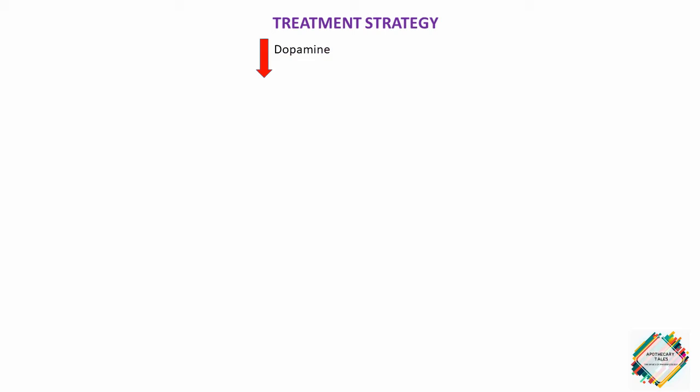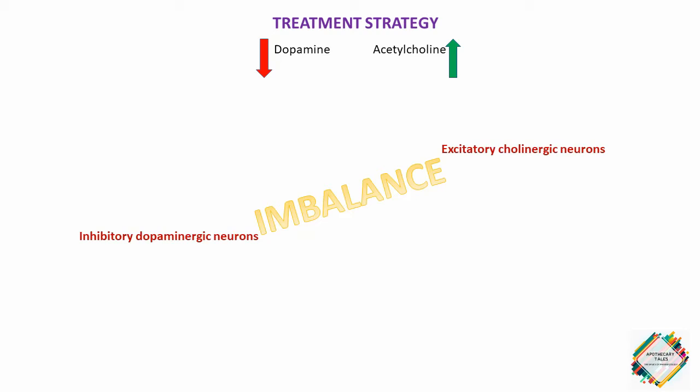What is the main treatment strategy involved in Parkinson's disease? The striatum is rich in both inhibitory dopaminergic neurons and excitatory cholinergic neurons that oppose the action of dopamine. Many of the symptoms of Parkinsonism reflect an imbalance between excitatory cholinergic neurons and the greatly diminished number of inhibitory dopaminergic neurons. Therapy is mainly aimed at restoring dopamine in the basal ganglia and antagonizing the excitatory effect of cholinergic neurons, thus re-establishing the correct dopamine–acetylcholine balance.